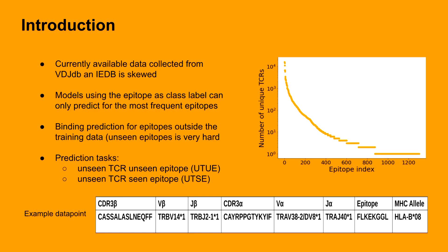We collected our data from VDJDB and IEDB. This data is skewed, having far more TCRs than epitopes. Also, a majority of all TCRs belong to a few most frequent epitopes, as can be seen from the figure. Models using epitope as a class label or binary classifiers for a specific epitope can only be trained on the most frequent epitopes.